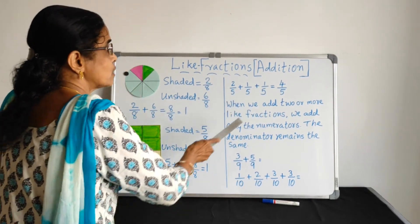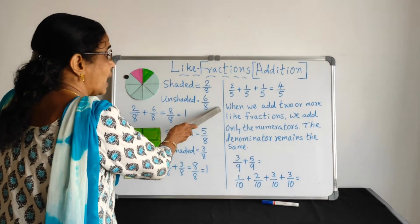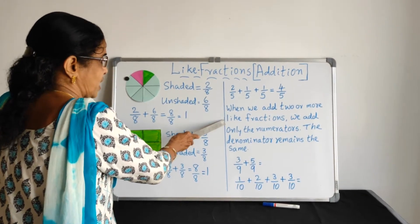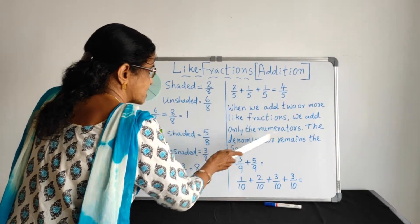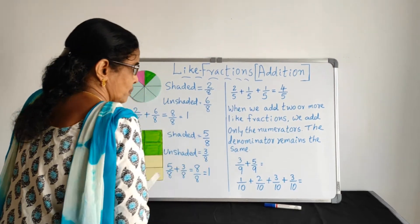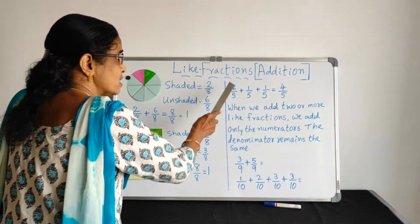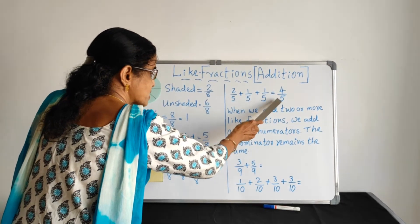The rule is when we add 2 or more like fractions, we add only the numerators. The denominator remains the same. Only you have to add the numerators and put it there. Denominator remains the same.